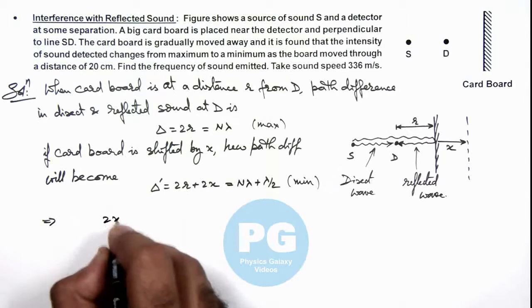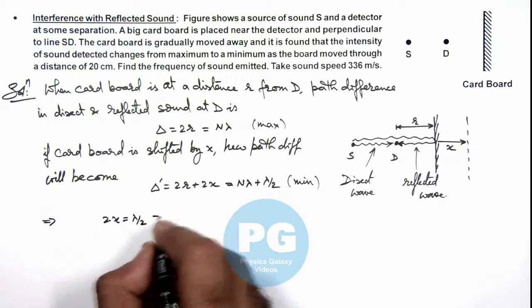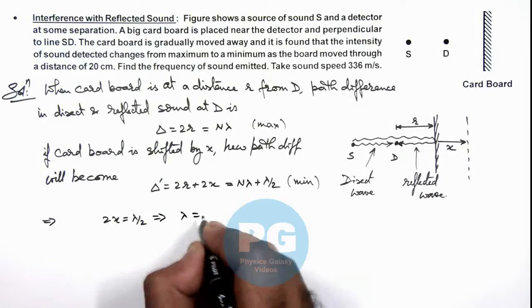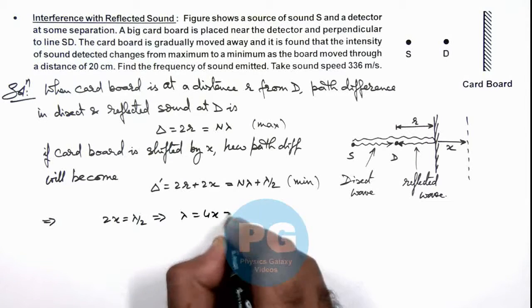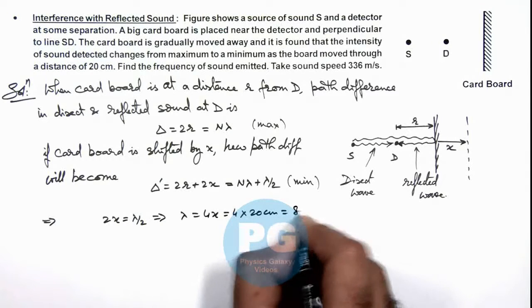This implies the value of lambda we are getting is 4x, that is 4 into 20 centimeters, that is 80 centimeters.